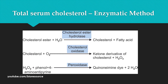The total serum cholesterol can be measured using the enzymatic method. In this method, cholesterol ester hydrolase converts cholesterol ester to cholesterol and fatty acids, and cholesterol oxidase converts cholesterol to a ketone derivative of cholesterol. The peroxidase enzyme then converts the hydrogen peroxide generated in the previous step, along with phenol and 4-aminoantipyrine, to give a colored compound that can be directly measured. The color development is directly proportional to the amount of cholesterol present in the serum.